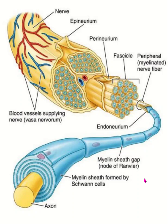Structure of peripheral nerve. A peripheral nerve or nerve trunk is surrounded by a connective tissue called epineurium. The nerve trunk is formed by several nerve bundles, and each nerve bundle is surrounded by another connective tissue,